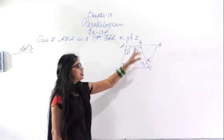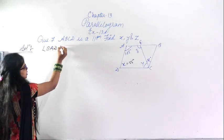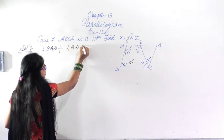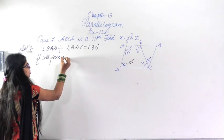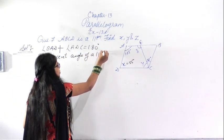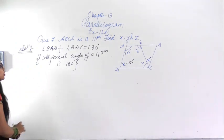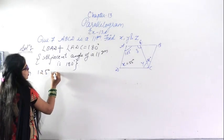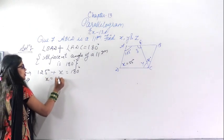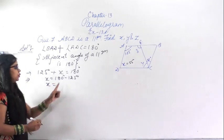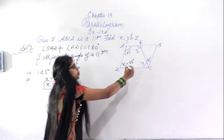We will start with angle BAD plus angle ADC equal to 180 degrees. Why? Because the sum of adjacent angles of a parallelogram is 180 degrees. Therefore, 125 degrees plus x equals 180 degrees. From here, x equals 180 minus 125, so the value of x is 55 degrees.